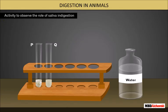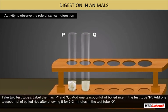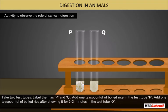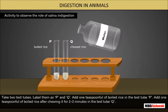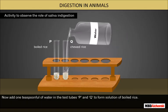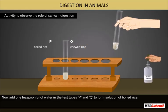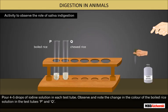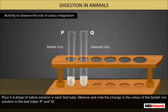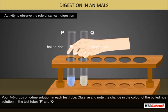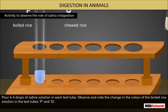Let us perform an activity to observe the role of saliva in digestion. Take two test tubes and label them as P and Q. Add one teaspoon of boiled rice in test tube P. Add one teaspoon of boiled rice after chewing it for two to three minutes in test tube Q. Now add one teaspoon of water in each test tube to form a solution of boiled rice. Pour four to five drops of iodine solution in each test tube and observe the change in the color of the boiled rice solution in test tubes P and Q.